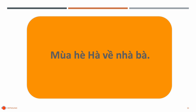Now let's try to say some sentences with many falling tones. We're going to do it in three steps. On the first step, I'm going to say the sentence very, very slowly. Then a little bit faster. Slowly: Mùa, hè. Ha. Về, nhà. Ba. A little bit faster: Mùa hè. Ha. Về nhà. Ba.